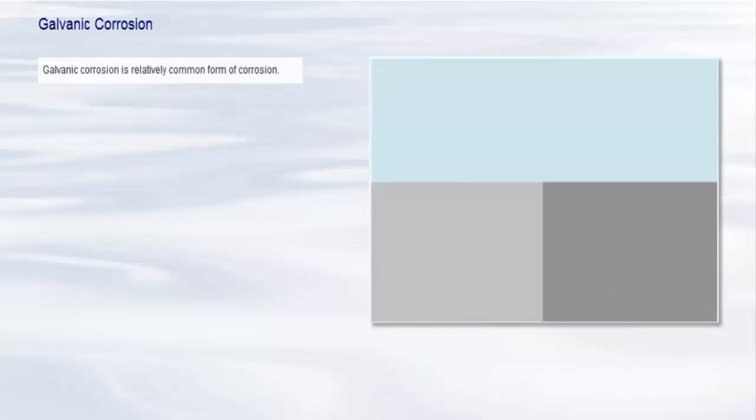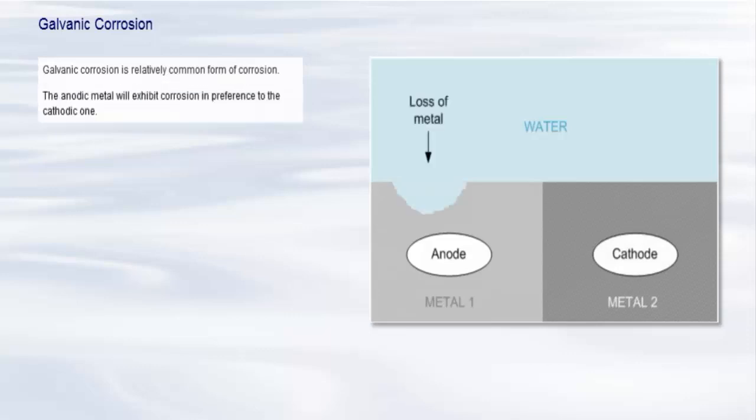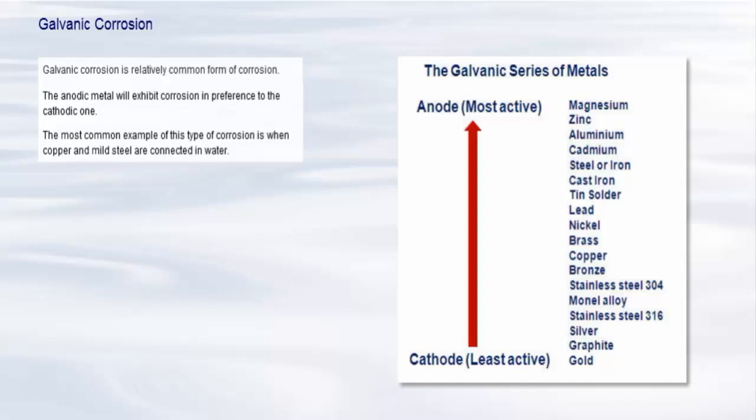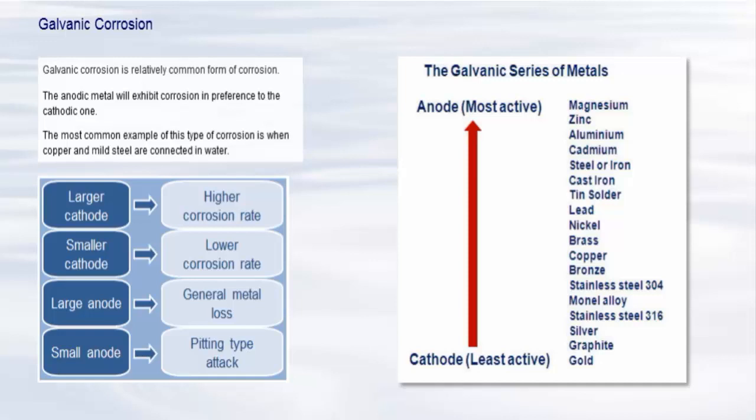This relatively common form of corrosion occurs when two dissimilar metals are connected and exposed to an aqueous environment. One metal becomes anodic and the other cathodic, thus setting up what is termed a galvanic cell. The anodic metal will exhibit corrosion in preference to the cathodic one. The most common example of this type of corrosion is when copper and mild steel are connected in water. The mild steel becomes anodic because it will give up electrons more readily than copper and will rapidly corrode. This diagram shows the galvanic series of common metals and alloys. The closer the metals are together in the series, the less the corrosion rate and vice versa. The rate of corrosion at the anode is very much related to the relative surface areas of the anodic and cathodic metals.